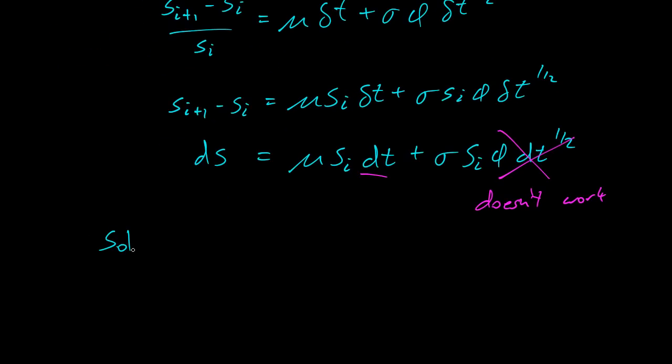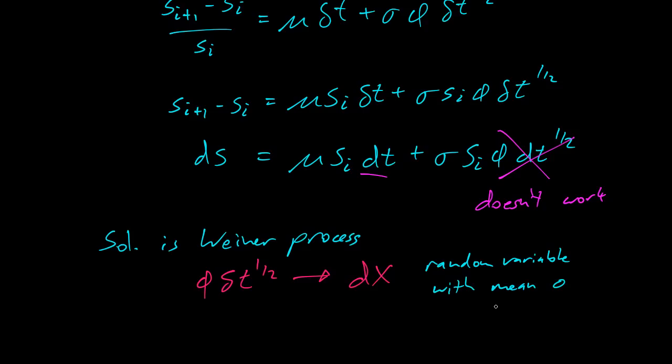So the solution is a Wiener process. And how does that work? So what we do is we say phi delta t to the 1 half, we write that as dx. And so dx will be a random variable with a mean of 0 and a variance of dt.